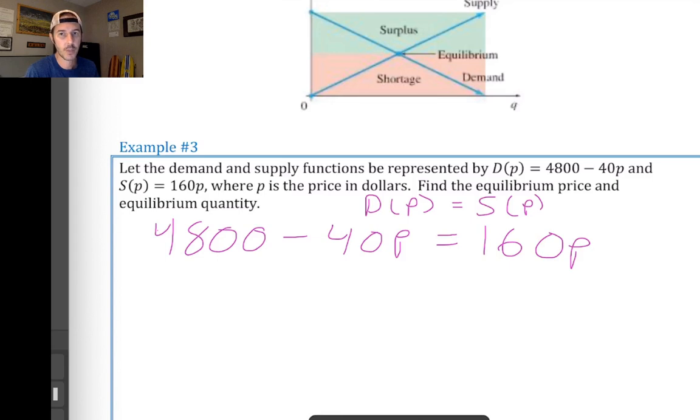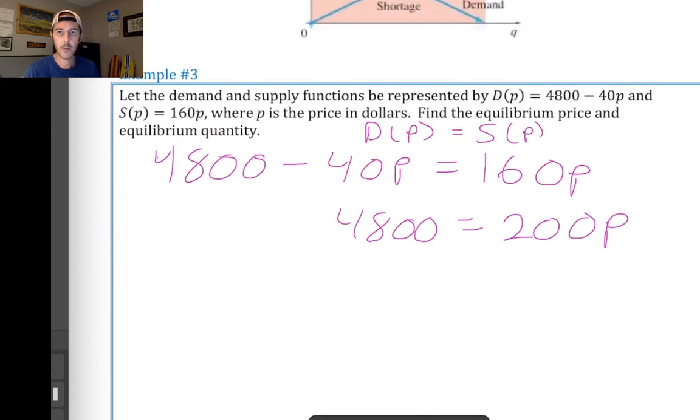So, here I've taken d of p and I've set it equal to s of p. And in order to solve this equation for p, the first thing I'm going to do, which I usually do, is move my variables over to one side of the equation. So, I'm going to add 40p to both sides. That will get rid of the 40p on the left hand side and it's going to increase this 160p by 40p, leaving me with 4800 on the left hand side and 200p on the right hand side. And then, in order to fully isolate our variable p, we'll divide both sides of the equation by 200.